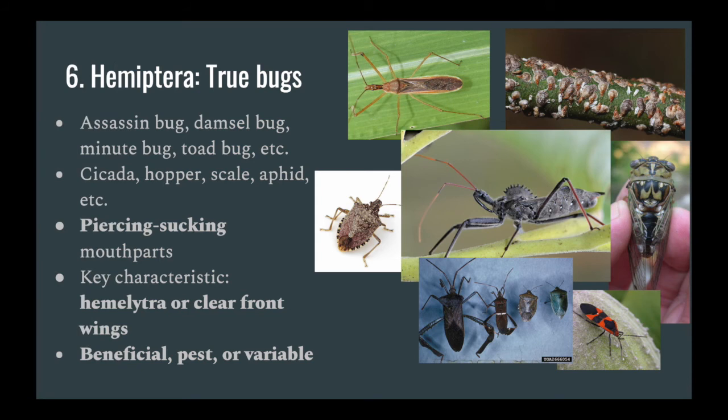Up next is Hemiptera, which is typically broken into three suborders that are all considered to be true bugs. First we have Auchenorrhyncha — examples include cicadas and leafhoppers. Next we have Heteroptera, also known as our true bugs of the true bugs, with examples like stink bugs. And finally we have Sternorrhyncha, which includes aphids, scale bugs, and several other different kinds.